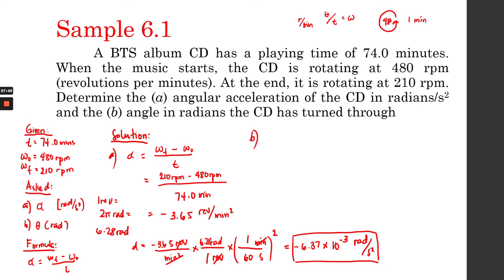Now let's solve for part B — how much angle the CD moved through, basically the angular displacement. What's being asked is: if this were a moving car, how far did it travel? But since it's rotating, we want to know how much angle it moved. In one minute it moved at 480 revolutions per minute at the start.